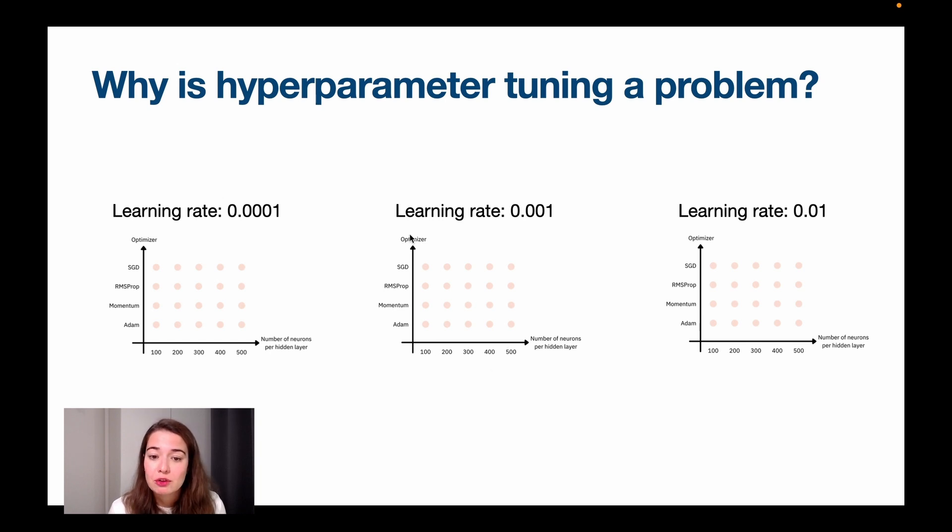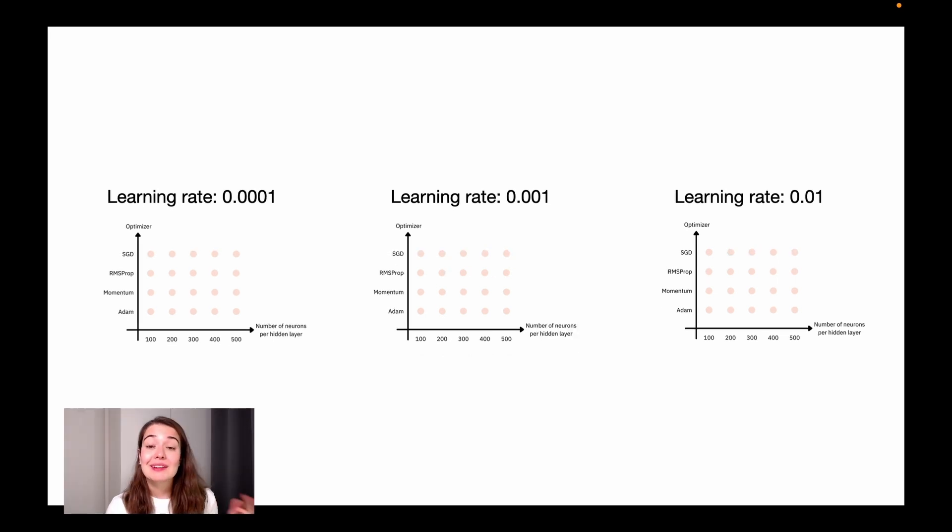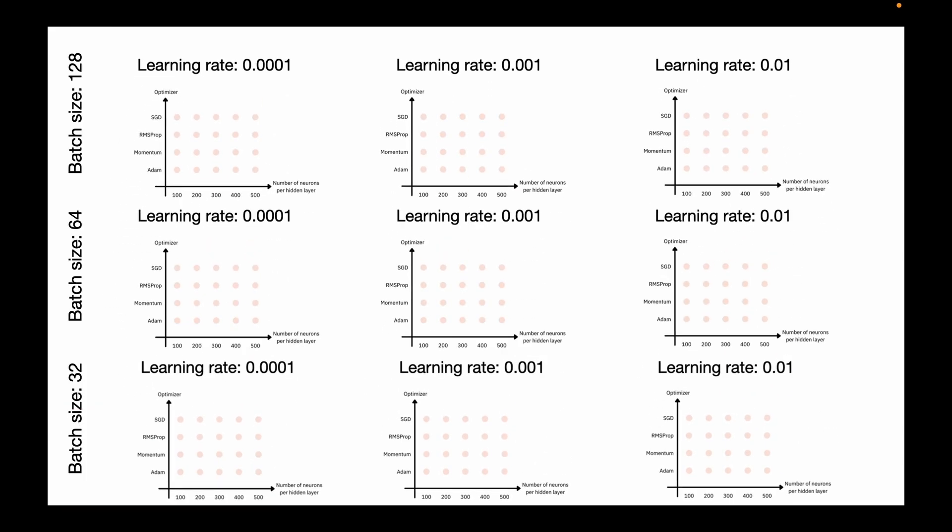Because for every combination of optimizer and number of neurons on this hidden layer, you're going to have a different learning rate. So in total, you're going to have 60 different cases that you need to try. Let's say you also want to optimize for batch size. So if you try three different batch sizes, let's say 32, 64, 128, all of a sudden, you have 180 different settings that you need to try to understand which one works better.